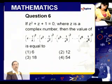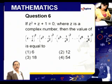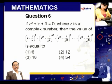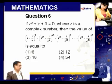We will go to question number 6. Z squared plus Z plus 1 is equal to 0. When you read this, what must come to your mind? The roots of these equations are omega and omega squared.